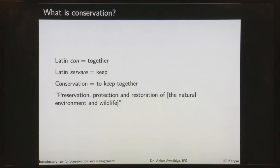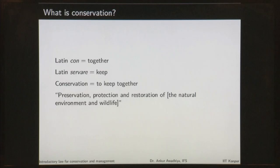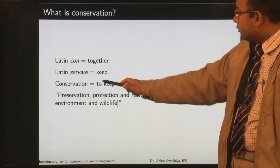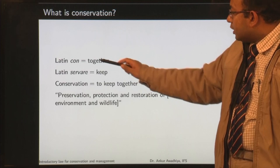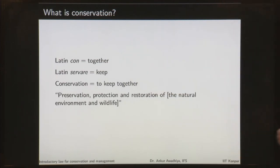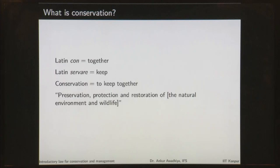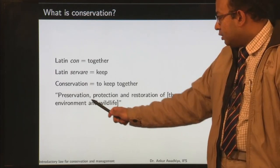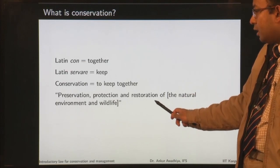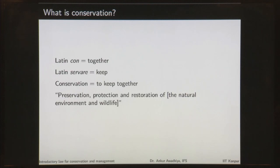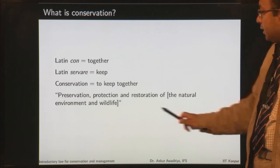What is conservation? The word conservation comes from two Latin word roots. The first is 'con', which means together, and the word root 'servare' means to keep. So conservation is to keep together — you are trying to keep something together, to preserve it so that it remains for a very long period of time. We can define conservation as preservation, protection and restoration, and generally this is done of the natural environment and wildlife.